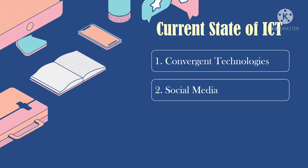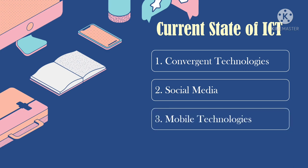Next, social media — these are software, applications, or platforms that allow users to communicate in online social communities or networks. Social media allows people to communicate faster through a larger number of people. Third, mobile technologies — a term for devices that are easily carried and allow fast means of communication. These devices were originally big and bulky, but due to technological advancement, they became smaller and more compact.